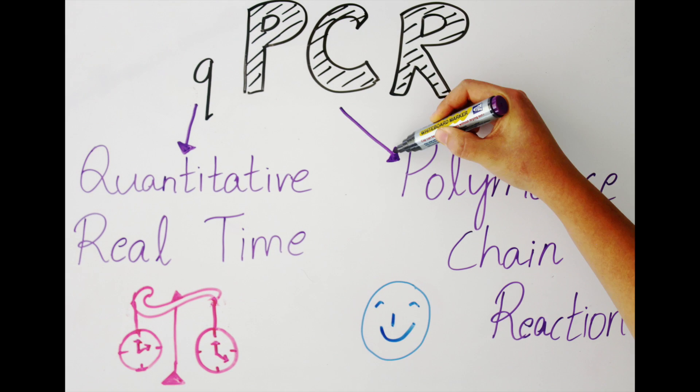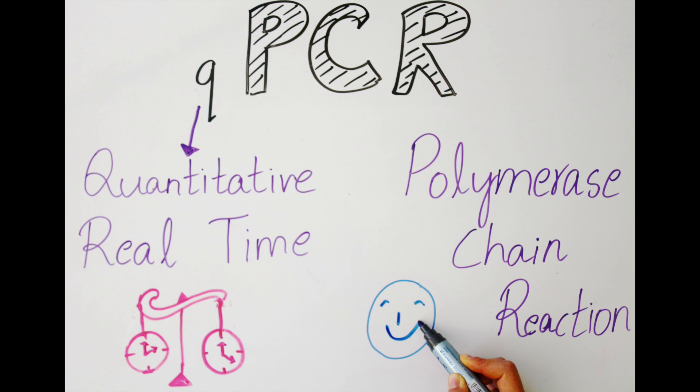qPCR, a quantitative real-time PCR, is simply classic PCR monitored using fluorescent dyes or probes.